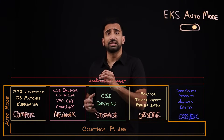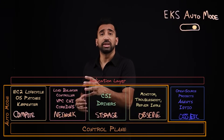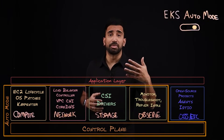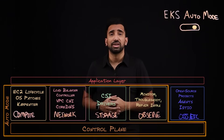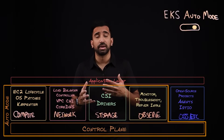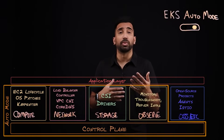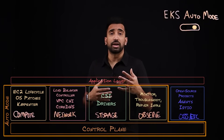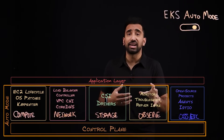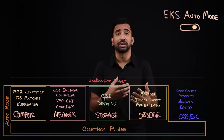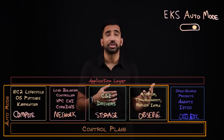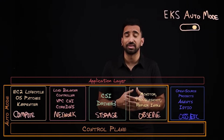For networking, these core capabilities — including the add-ons — are going to be managed on your behalf. For storage, CSI drivers that enable you to connect up persistence for stateful workloads are going to be managed for you. On the observability side, you have out-of-the-box capabilities to troubleshoot your infrastructure and monitor the health.